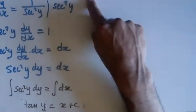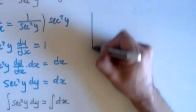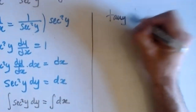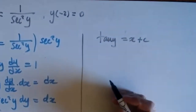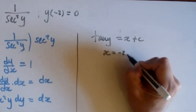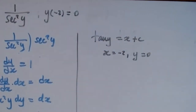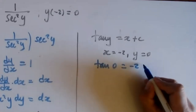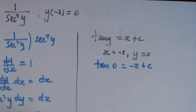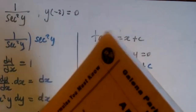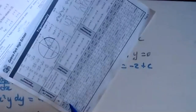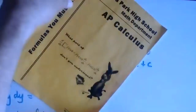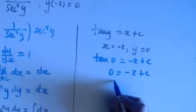Now I apply the initial condition. For x equals negative 2, y equals 0. So: tangent(0) = −2 + C. I need to remember that tangent(0) = 0. So: 0 = −2 + C, which gives C equals 2.